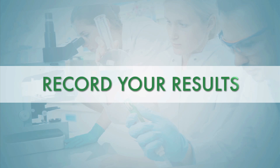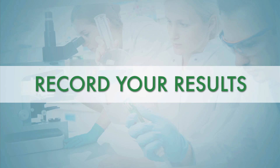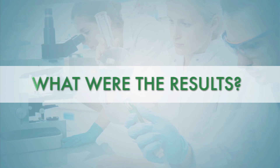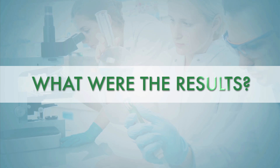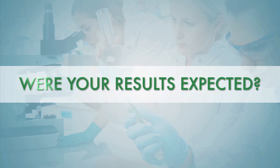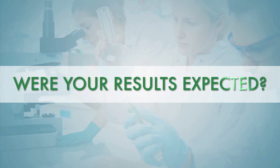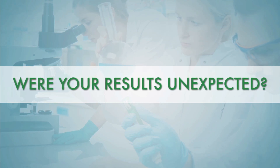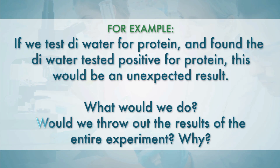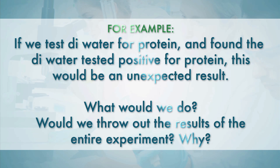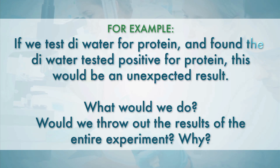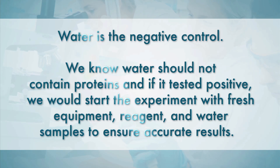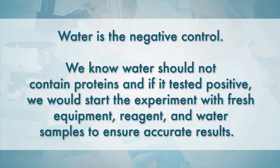Now that you have the results, work through each test tube and make conclusions. Please answer the following questions in your conclusion section: one, what were the results — what color was the substance when biuret was added? Two, were your results expected, and why or why not? Three, if your results were unexpected, explain why and indicate possible reasons, including what you would do going forward. For example, if DI water tested positive for protein — an unexpected result — we would restart the experiment with fresh equipment, reagent, and water samples to ensure accurate results.